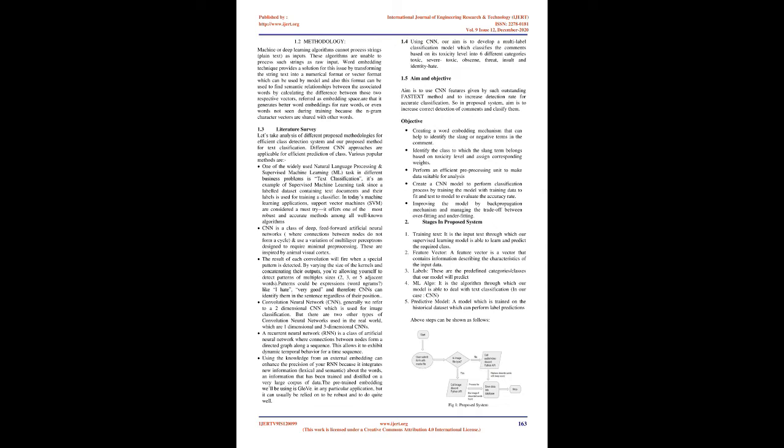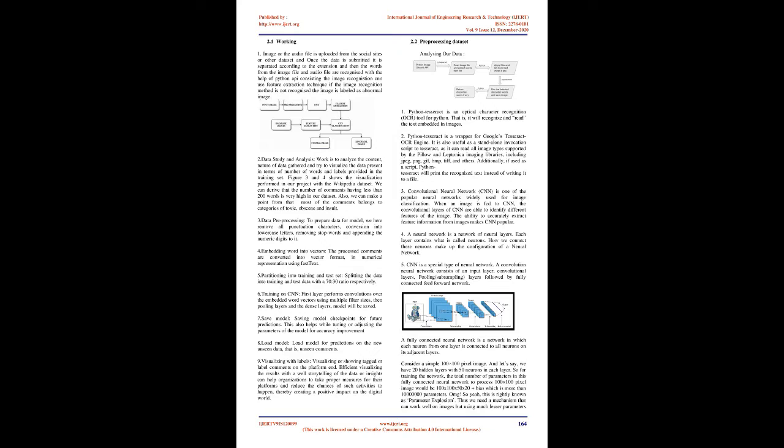1.4 Using CNN, our aim is to develop a multi-label classification model which classifies the comments based on its toxicity level into six different categories: toxic, severe toxic, obscene, threat, insult and identity hate. 1.5 Aim and Objective. The aim is to use CNN features given by the FastText method and to increase detection rate for accurate classification. In the proposed system, the aim is to increase correct detection of comments and classify them. Objectives include: creating a word embedding mechanism that can help to identify slang or negative terms in the comment; identifying the class to which the slang term belongs based on toxicity level and assigning corresponding weights; performing an efficient pre-processing unit to make data suitable for analysis; creating a CNN model to perform the classification process by training the model with training data to fit and test the model to evaluate the accuracy rate; and improving the model by back-propagation mechanism and managing the trade-off between over-fitting and under-fitting.